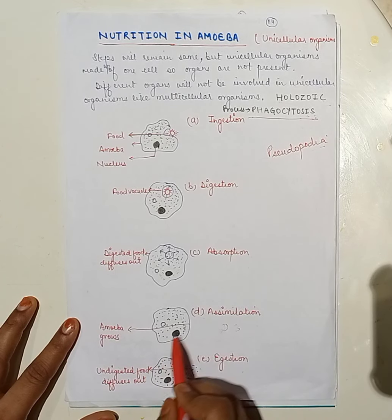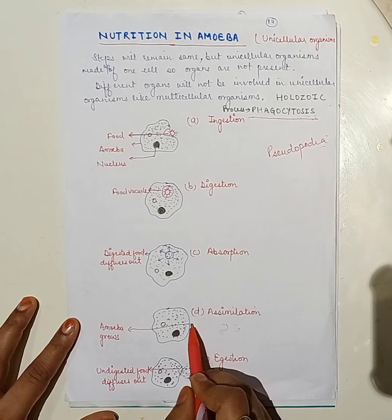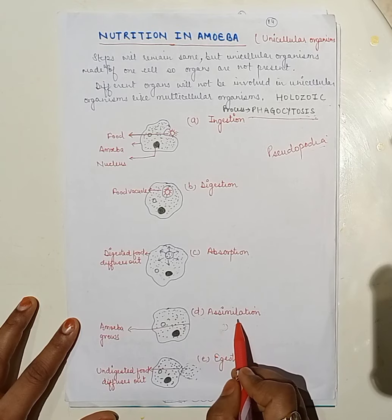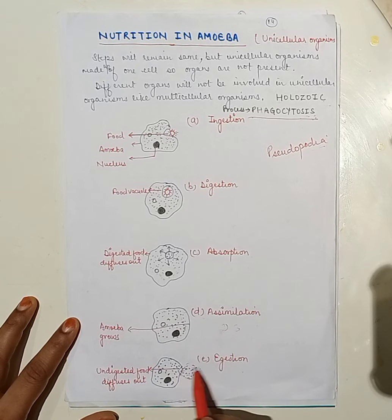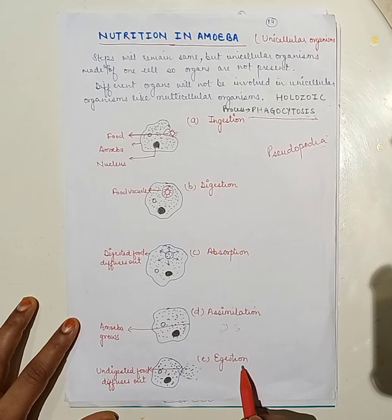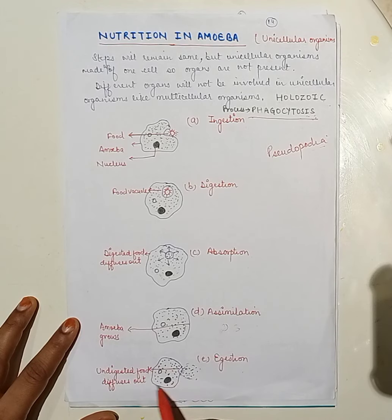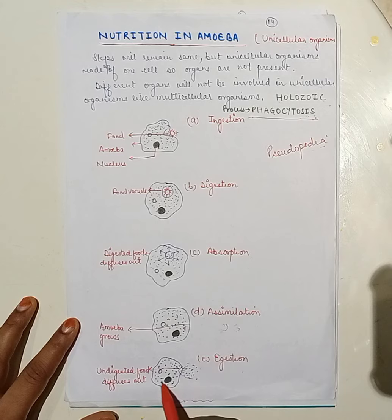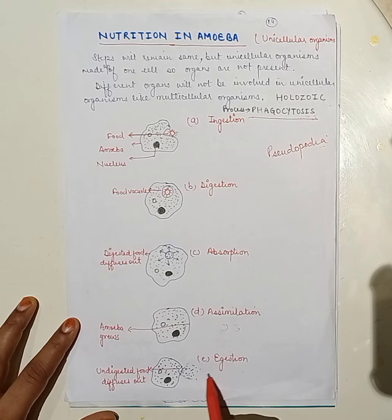The last step is egestion. For its growth and division, amoeba uses its nutrition. The undigested food diffuses out from the body — the surface layer of the body breaks down and undigested food diffuses out from the body of the amoeba.